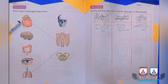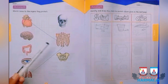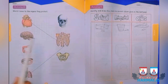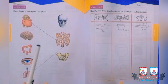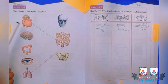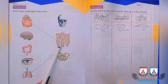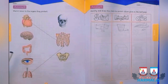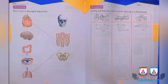You have to match each organ according to the bone that protects it. For example, I have matched the heart and lungs with the rib cage, since the heart and lungs are located in the chest area, which is protected by the rib cage. You have to match the remaining organs — like brain, spine, and eye — with the given bones such as the pelvis and skull.